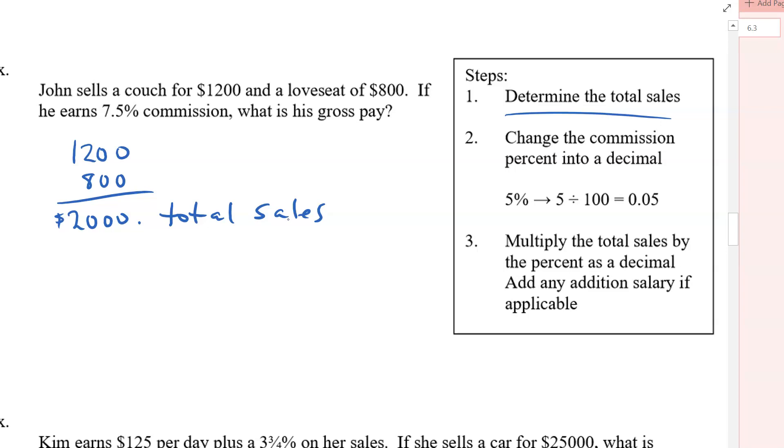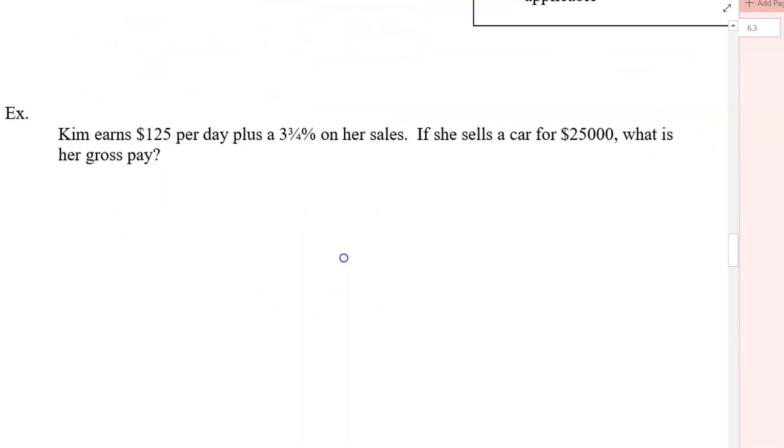If he earns 7.5% commission. Well, we already know that that 7.5% was 0.075 because we've done it once already. So that was the next step. So our next thing is multiply it out. So we're going to get $2,000 times 0.075. And I'm not sure what that one is. I guess I would have to get my calculator out. Oh, it's $150.